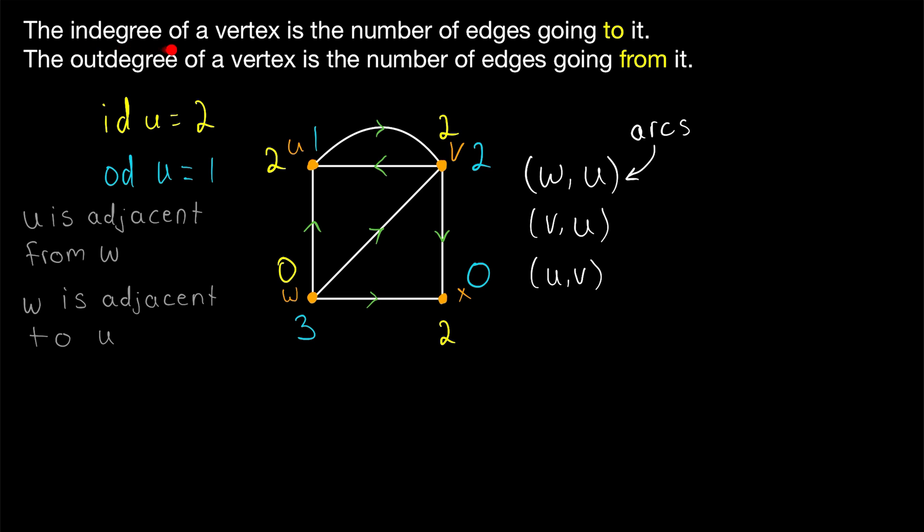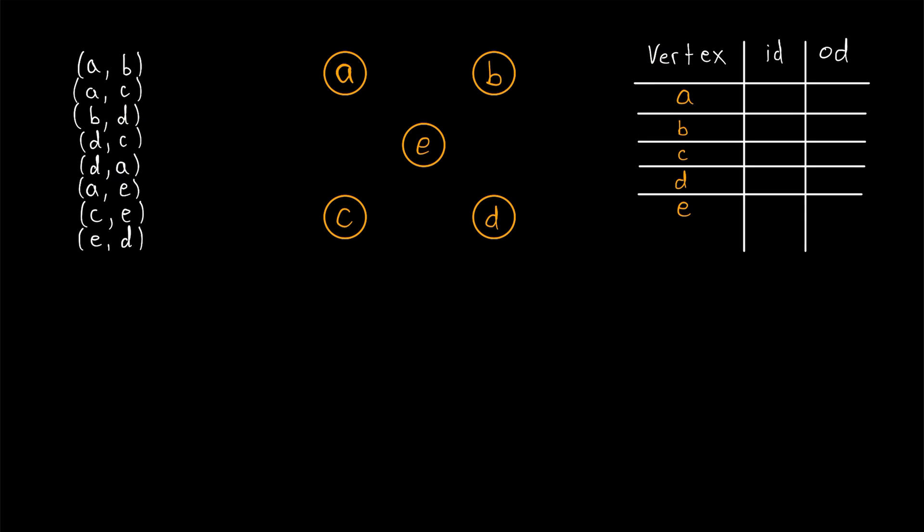So once more, the in-degree of a vertex is simply the number of edges going to it, whereas the out-degree of a vertex is the number of edges going from it. The in-degree counts the number of arcs going into a vertex. The out-degree counts the number of arcs going out of the vertex. One last exercise for you.